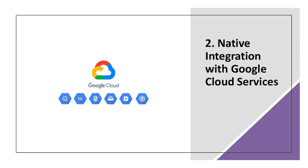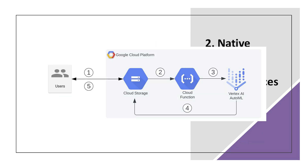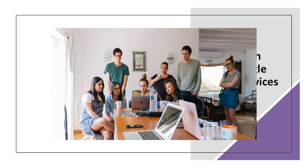Agents built with Vertex AI integrate seamlessly with Google's ecosystem, including BigQuery, Dialogflow, Cloud Functions, and more. This allows agents to retrieve real-time data, trigger workflows, and respond contextually. It's ideal for teams already operating within the Google Cloud Platform.